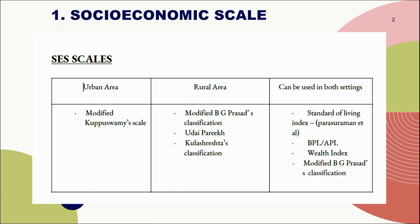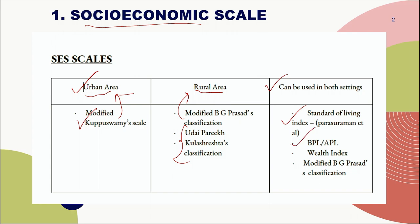The first topic is socioeconomic scales. When applying socioeconomic scales, we need to choose based on the residential area — whether it is urban, rural, or both settings. The commonly recommended scale is the modified Kuppuswamy scale for urban areas. Udai Pareekh and Kulshrestha's classifications are for rural areas. Scales usable in both settings include the Standard of Living Index by Parasharaman et al., APL and BPL classifications, wealth index, and modified BG Prasad's classification.